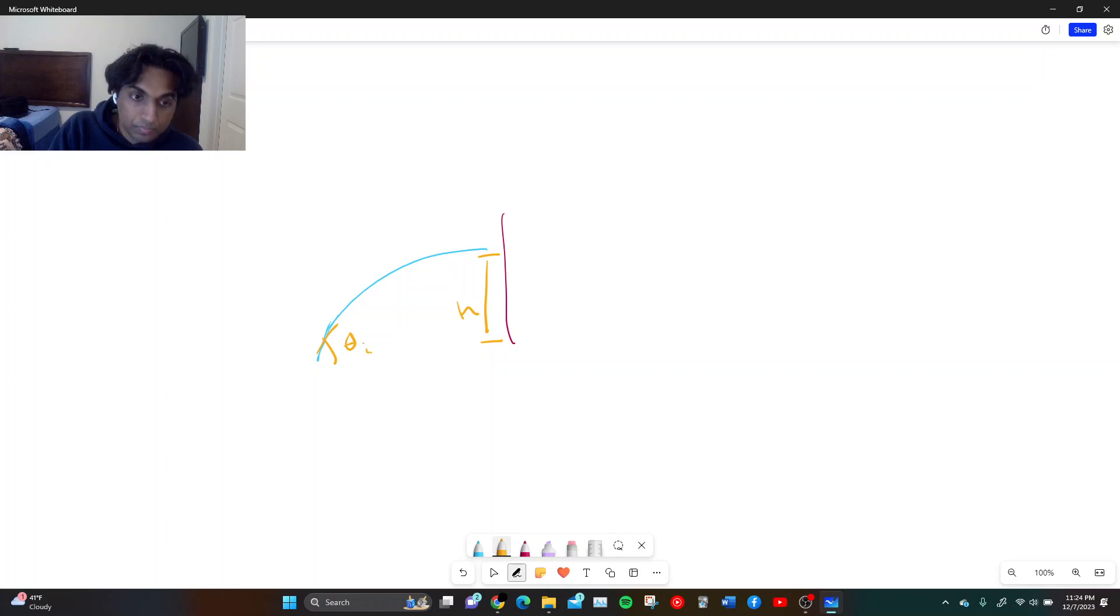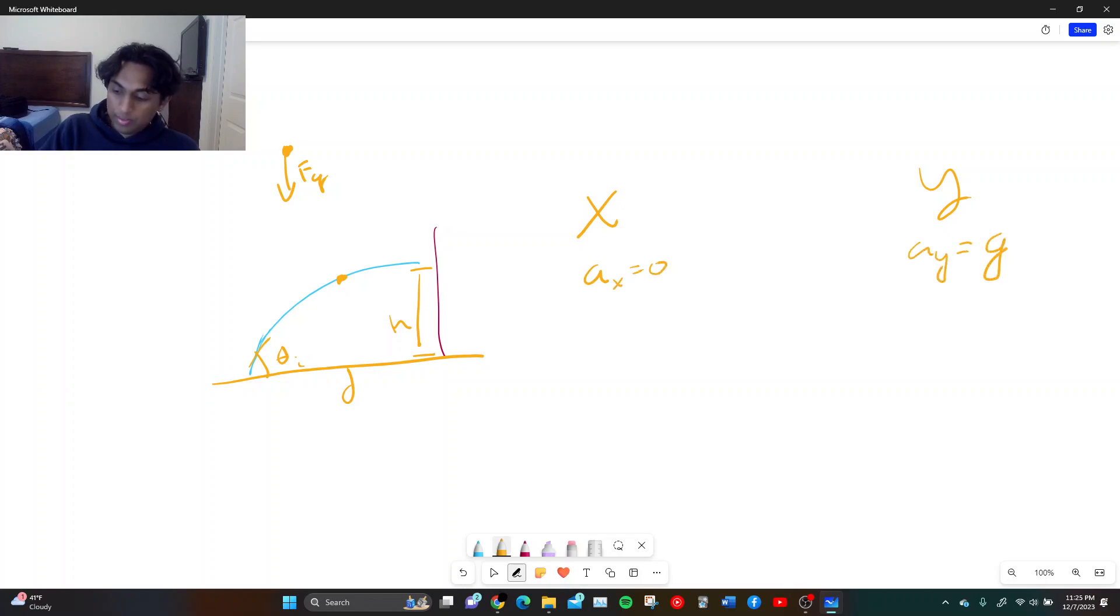This is theta. So we're essentially trying to find this distance right here. How do we approach this question? Always split it into two dimensions. X dimension, Y dimension here. In our X dimension, if you go back to the formula video, in the X dimension there is never acceleration in a free-fall question. How do I know this is a free-fall question? Well, if we draw a free-body diagram for a single drop of water out here, it's going to have force of gravity pulling down, and that's it.